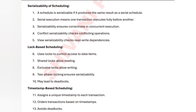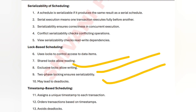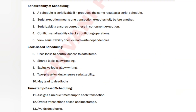Lock-based scheduling controls access by allowing only shared locks for reading and exclusive locks for writing. It uses two-phase locking to ensure serializability, but it may lead to deadlocks.